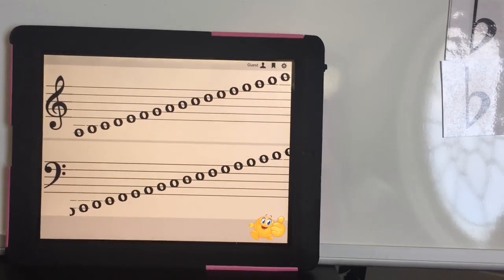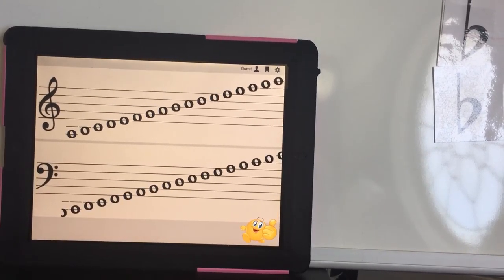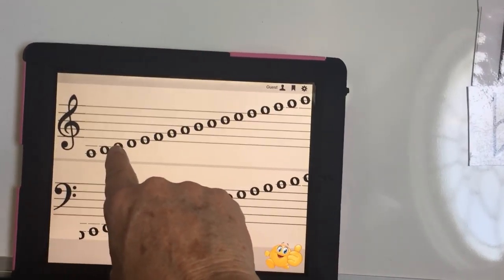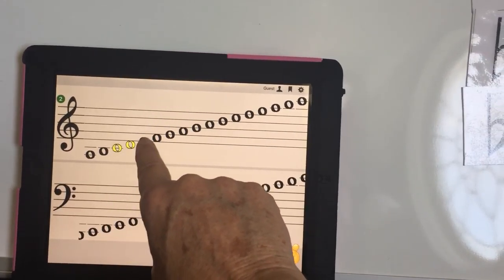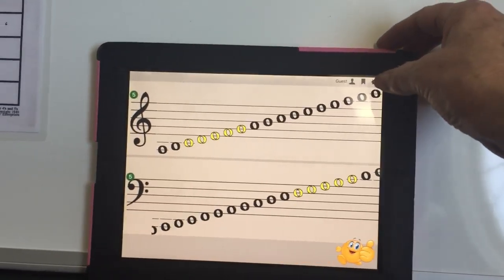This is where you set up the notes that you would like your student to be quizzed on during the game. For the treble clef, I'm going to select middle C through G.